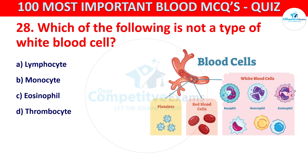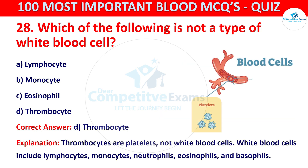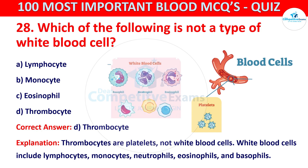The correct answer is D, that is Thrombocyte. Thrombocytes are platelets, not white blood cells. White blood cells include Lymphocytes, Monocytes, Neutrophils, Eosinophils, and Basophils. Question 29.